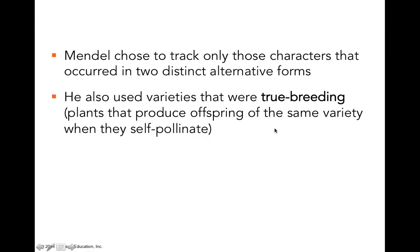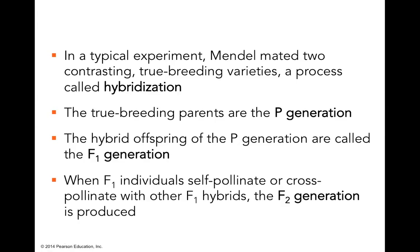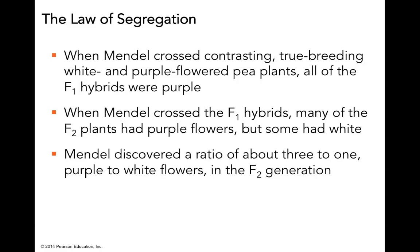He started with true-breeding varieties — plants that produce offspring of the same variety when they self-pollinate. When he crossed the true-breeding parents he was creating what we now call a hybrid — this is called hybridization. The true-breeding parents were the P generation, the first hybrid generation was the F1 generation, and then he allowed the F1 generation to self-pollinate and generate the F2 generation. In the F2 generation he got not only purple-flowered plants but also white-flowered plants.